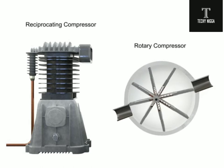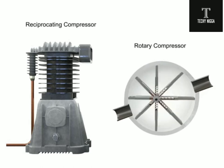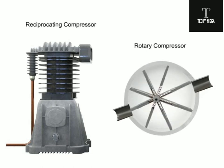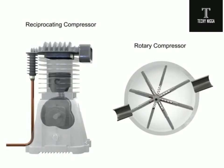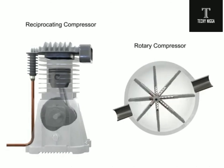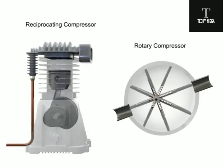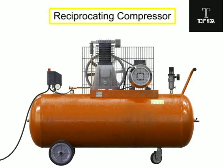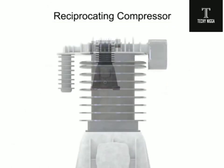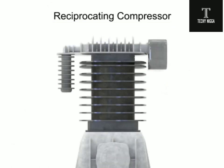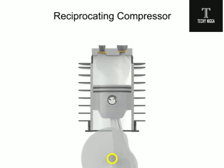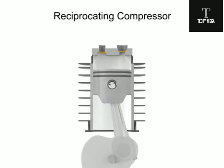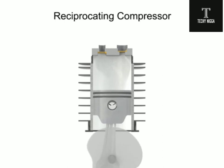Rotary compressors are typically free of the vibration and pulsation that occurs with reciprocating compressors. A typical reciprocating compressor consists of a housing with an internal piston connected to a crankshaft. As the crankshaft turns, a piston reciprocates within the cylindrical housing.